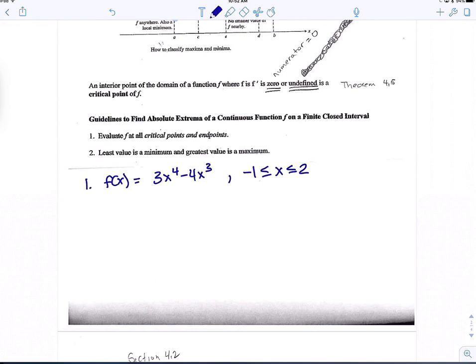Okay, so the first step said we're going to evaluate f at all critical points. So basically, we want to take the derivative of our function and set it equal to 0. So first of all, what's the derivative of this? 12x to the 3rd minus 12x squared, right? Okay, and then we set that equal to 0.